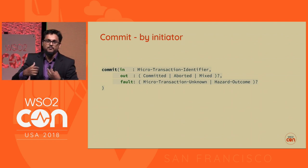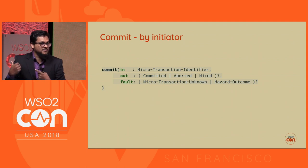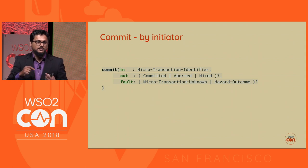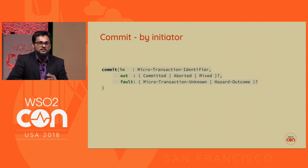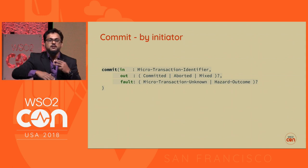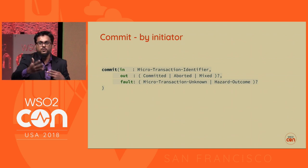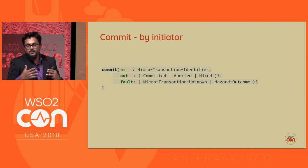As an initiator, in my transaction code I decide to commit. When I do a commit, this results in a number of protocol flow calls depending on the coordination type. Microservice one initiates the commit. Or if something has failed or conditions are not satisfied, I can decide to abort.